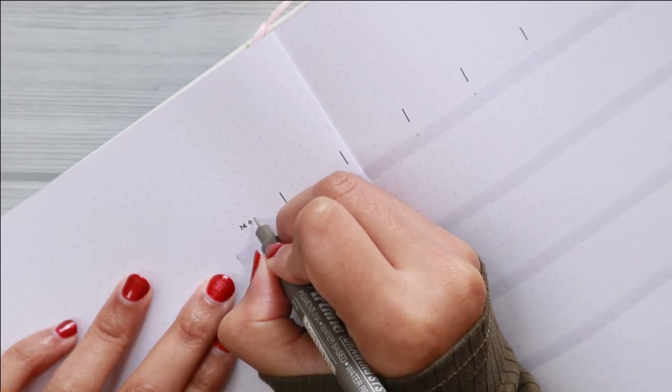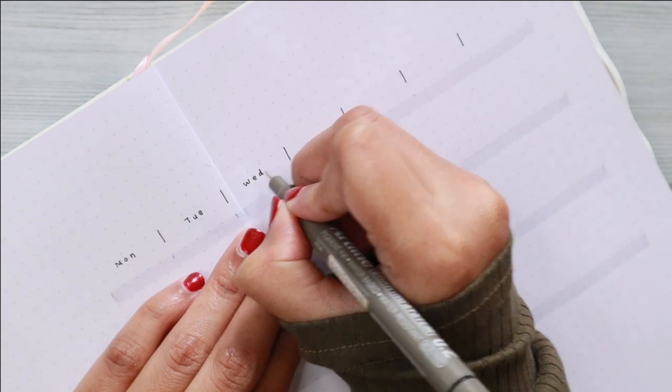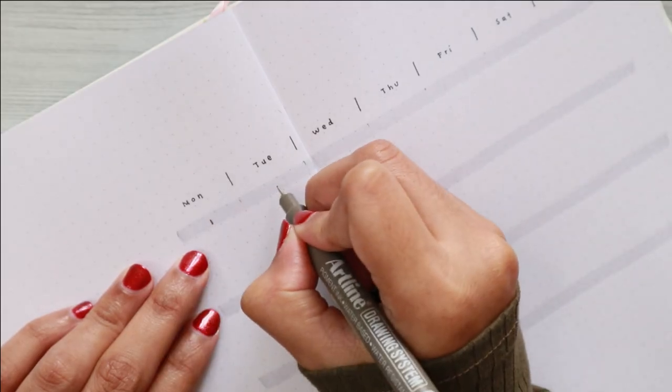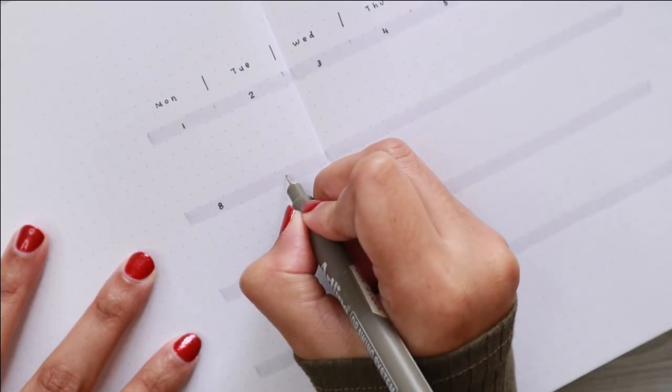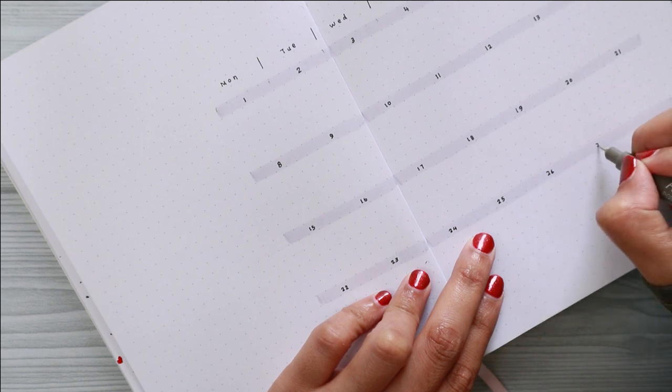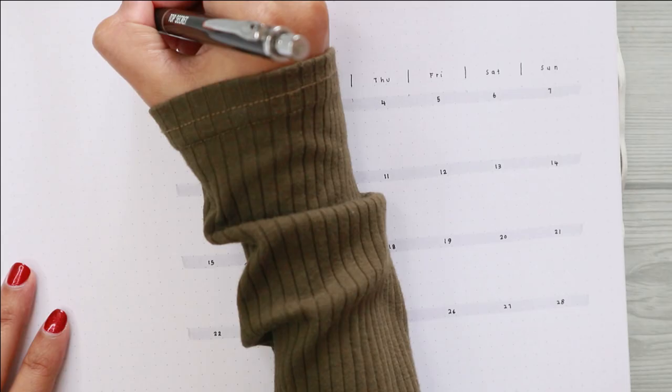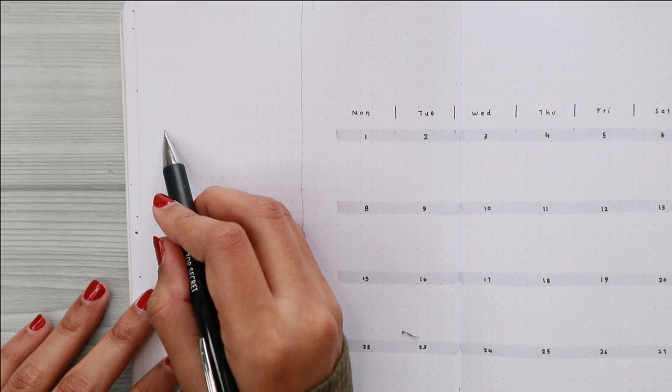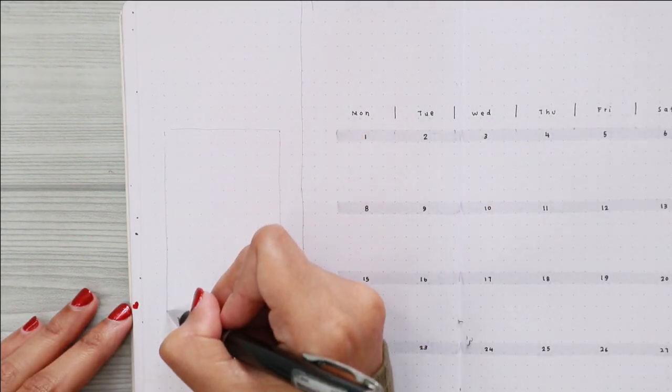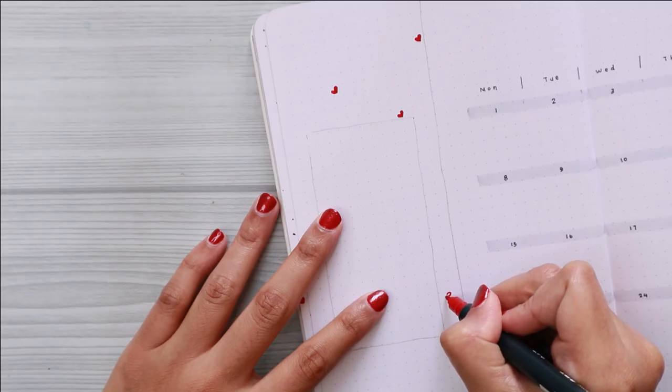For this monthly log, I use my Tombow Dual Brush Pen in code N95 and draw some lines to divide the days. The size for each day is 5 by 6 grids, including the gray lines. After I am done writing down the days, I went ahead and wrote down the dates. Yeah, I think that's basically it for the layout—very simple but turns out very cute at the same time.